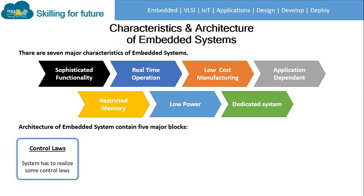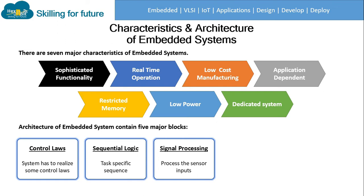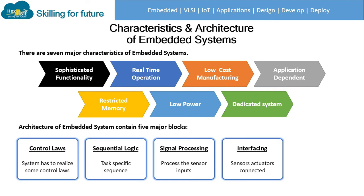The architecture of an embedded system contains five major blocks. The first is control laws — the system must realize a control law, following it from beginning to end of operation. The second is sequential logic — the sequence should be designed as per the task specification, defining the order in which functions are performed. The third is signal processing — this block is responsible for processing inputs received by sensors, similar to a DVD player.